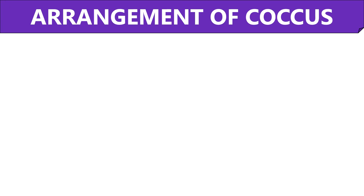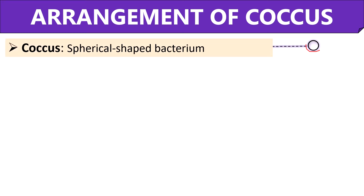Based upon the plane of cell division, bacterial cells are arranged in different forms. Let us study each of them in detail. Starting with the arrangement of cocci. Cocci is a spherical shaped bacterium where cell division can occur in one plane, two planes, or three planes. Based upon the cell number and arrangement, cocci exist in various forms, like individual cells, chains, and pairs.